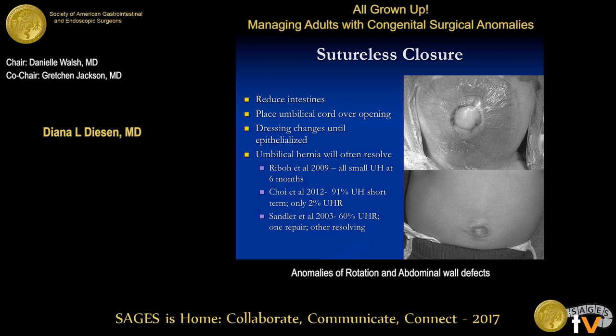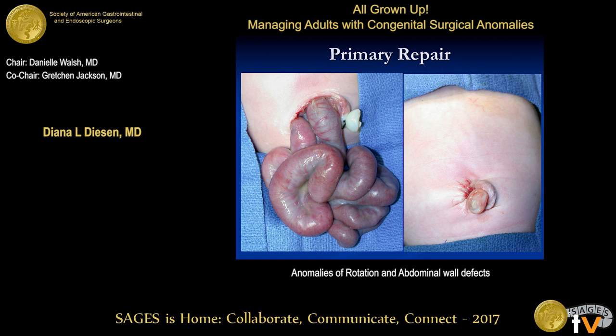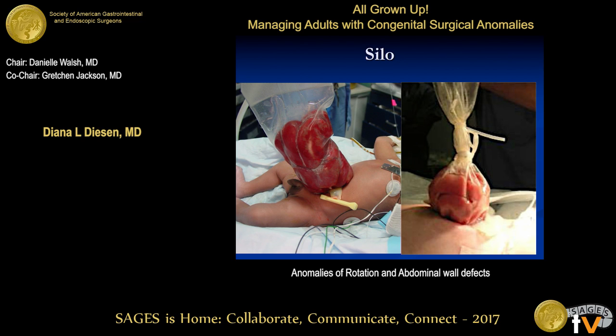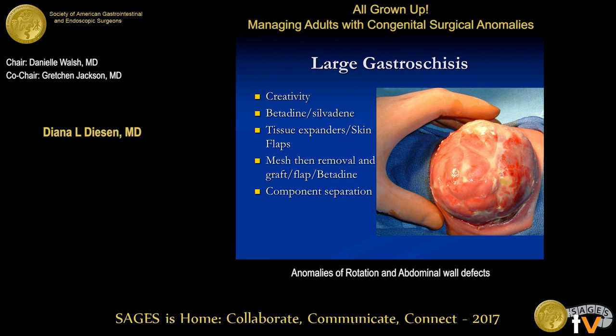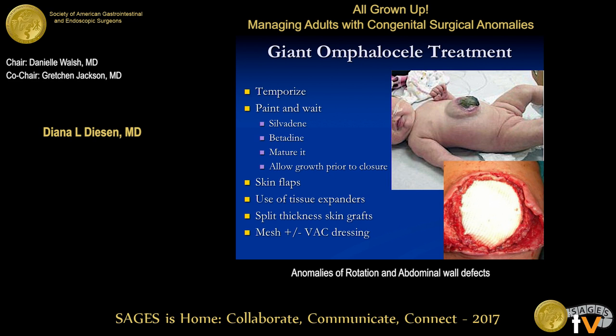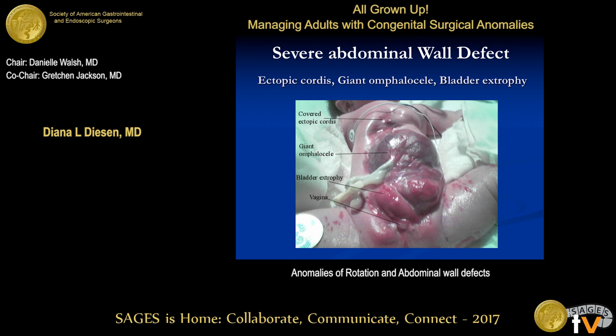When we repair these, there are a couple of different approaches. More recently there have been descriptions of sutureless repair — we reduce the abdominal contents and place a dressing such as Tegaderm, Meplex, or Duoderm over it. It's remarkable that most of these will have umbilical hernias right afterwards, but by age five these often resolve. Those that haven't can undergo elective repair at age five. You can also do a primary repair where you reduce and close, or place contents in a silo and gradually reduce twice daily, then close either primarily or sutureless. Large defects can require tissue expanders and involvement of plastic surgery colleagues. Giant omphalocele — since they already have a covering — we paint and wait until the child gets bigger. Component separation can also be used. The more severe the abdominal wall defect and the more concomitant anomalies, the worse the outcomes.